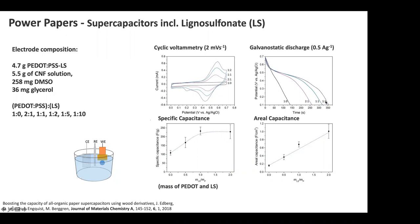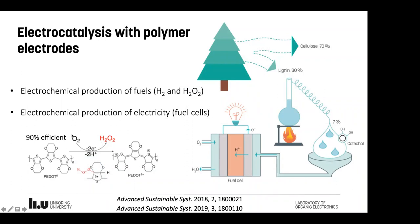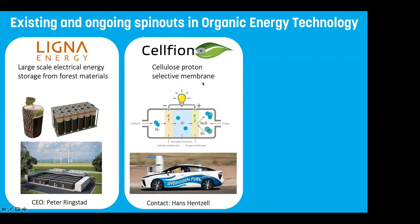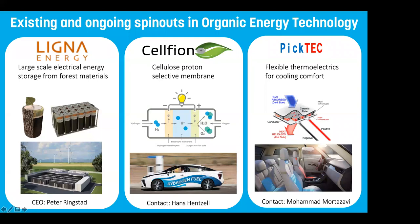We also use the same PEDOT:PSS electrode at negative potentials. We are interested in electrochemically converting oxygen via the oxygen reduction reaction into hydrogen peroxide for future fuel applications. We do quite a lot of ionic thermoelectrics where we have polyelectrolytes combined with PEDOT:PSS to have selective migration of either anions or cations, deriving chargeable capacitors driven entirely by thermal gradients. We have a few initiatives on membranes and thermoelectric generators based on these findings.